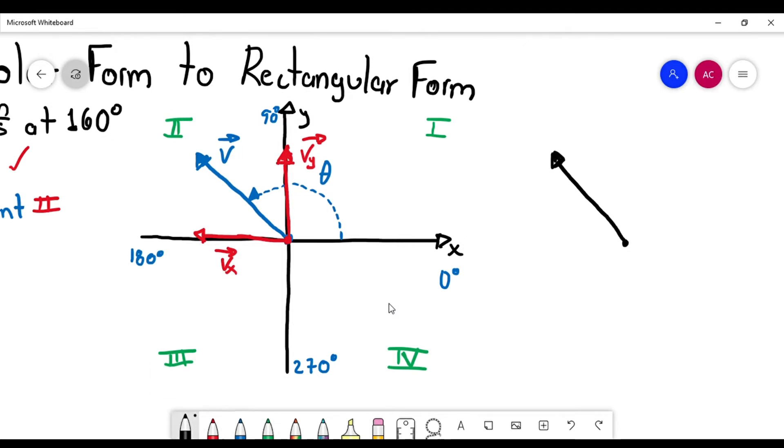So this is the vector. Remember that the vector is the hypotenuse of the right triangle. And then I got Vx. And then I got Vy. This is Vx. And this is Vy. Okay.